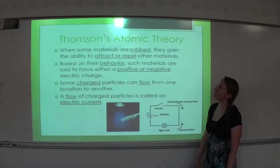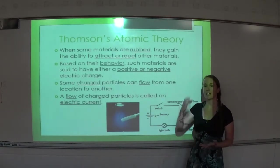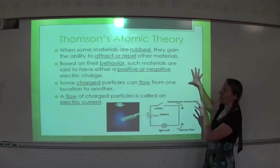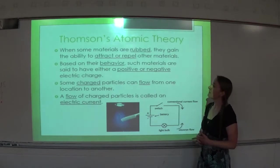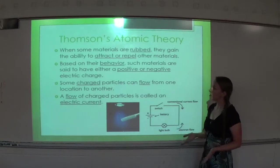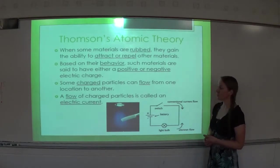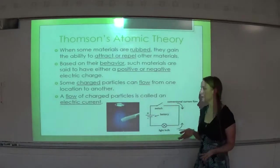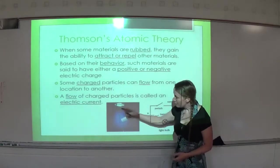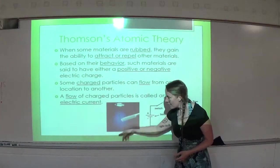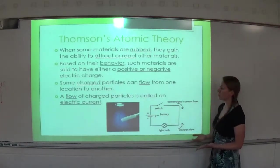Thomson's atomic theory: when some materials are rubbed, they gain the ability to attract or repel other materials — like rubbing a balloon on your hair and getting it to stick to the wall. Such materials are said to have either a positive or negative electric charge. Some charged particles can flow from one location to another, and a flow of charged particles is called an electric current. If you comb your hair a lot, you will charge the comb, and if you hold it to water dripping downward, it will cause the water to bend toward or away from the comb depending on its charge.